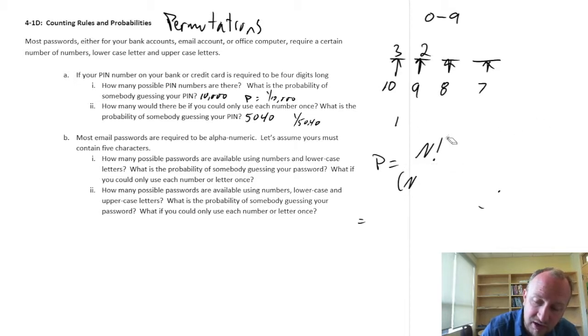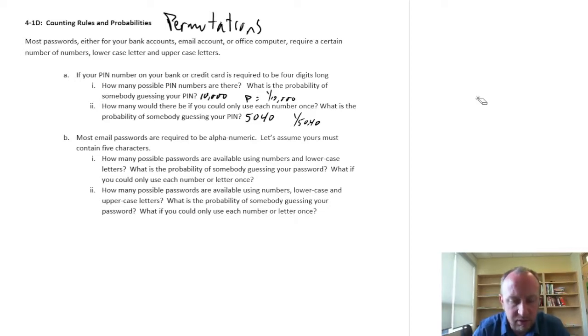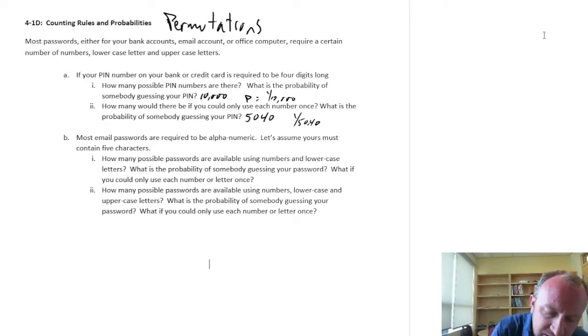So, now we're going to look at alphanumeric passwords. So, how does that change things? So, this first one. How many possible passwords are available using numbers and lowercase letters? What's the probability of somebody guessing it? What if I could only use each number or letter once? So, the same kind of, same types of calculations now. So, I have a password must be five characters.